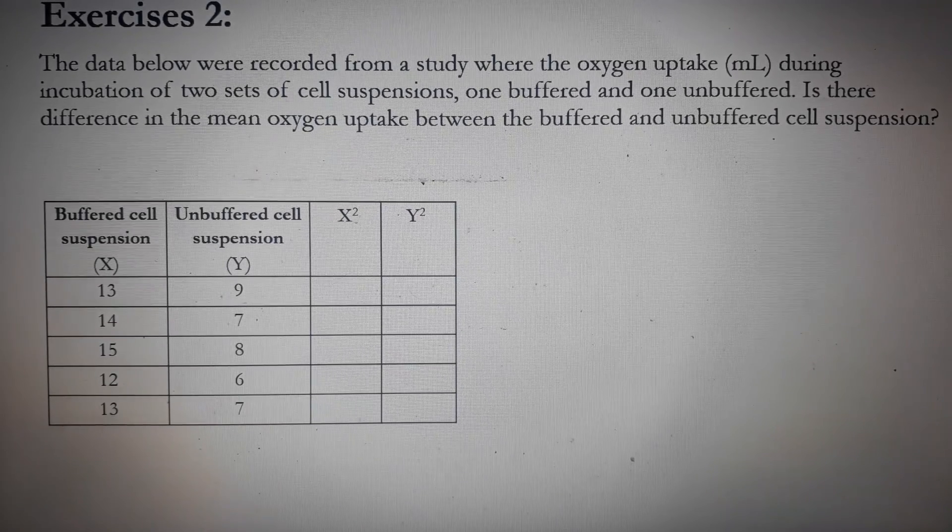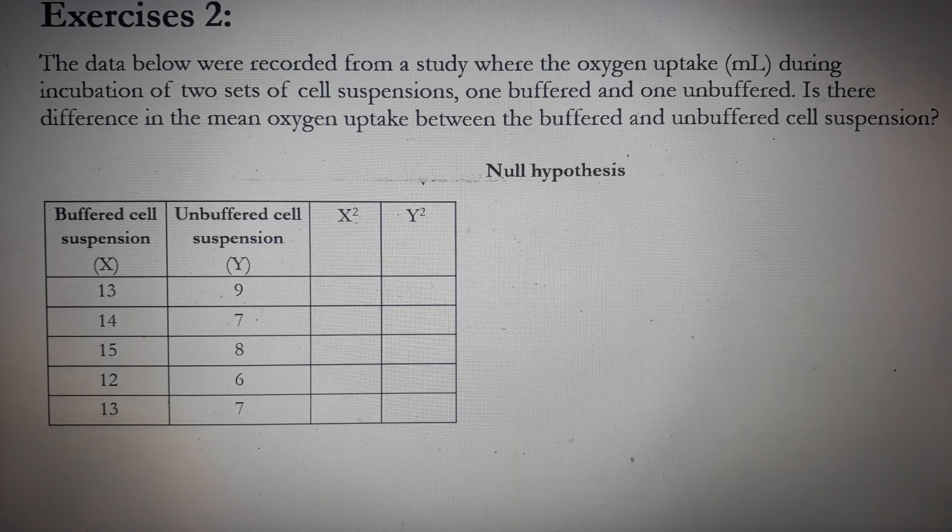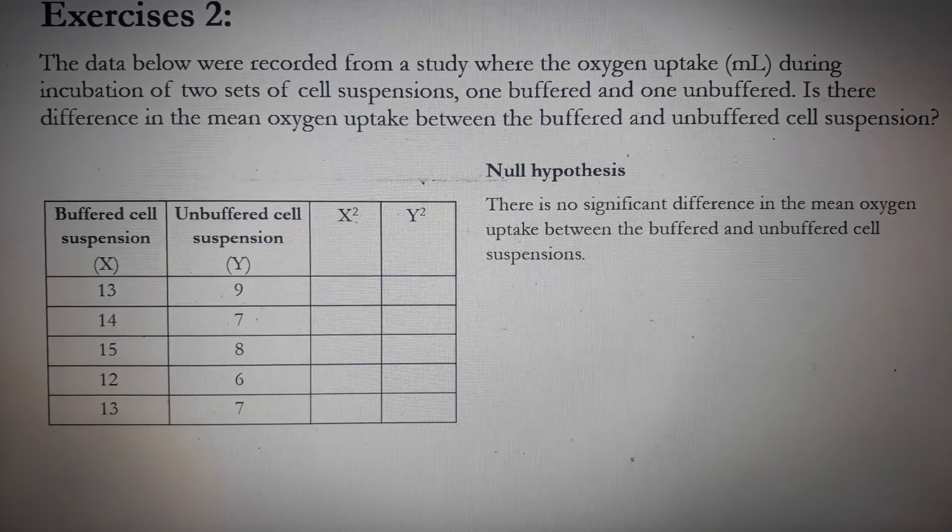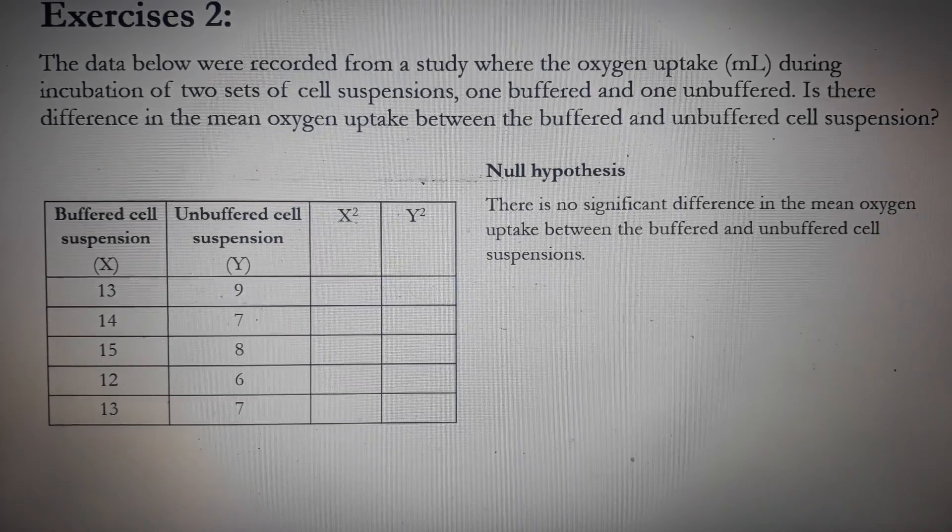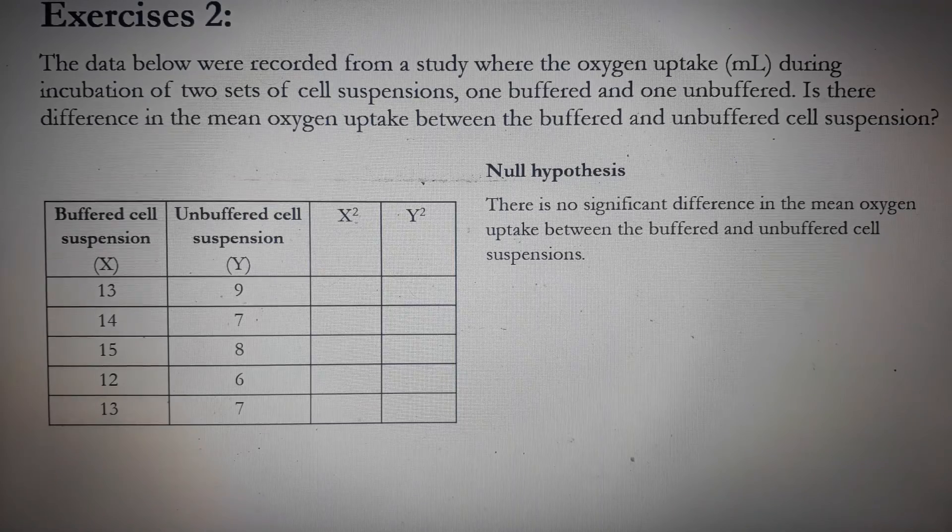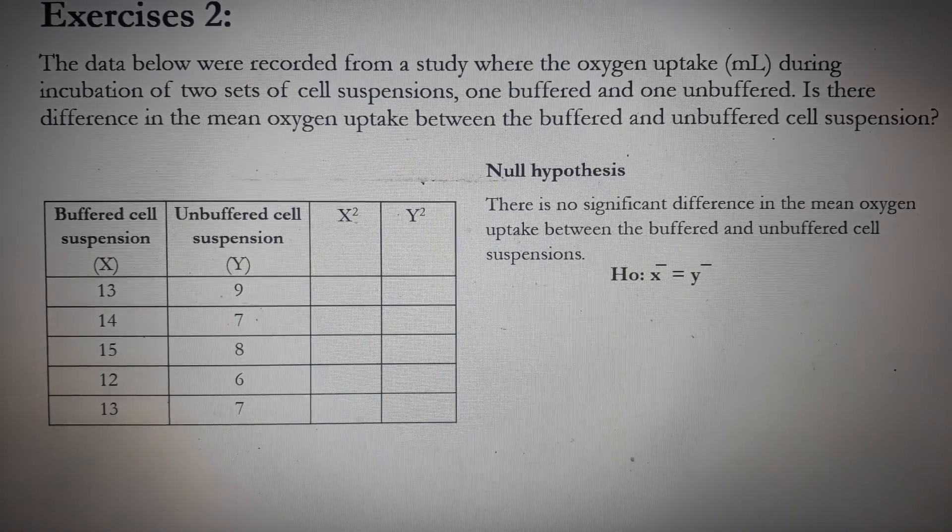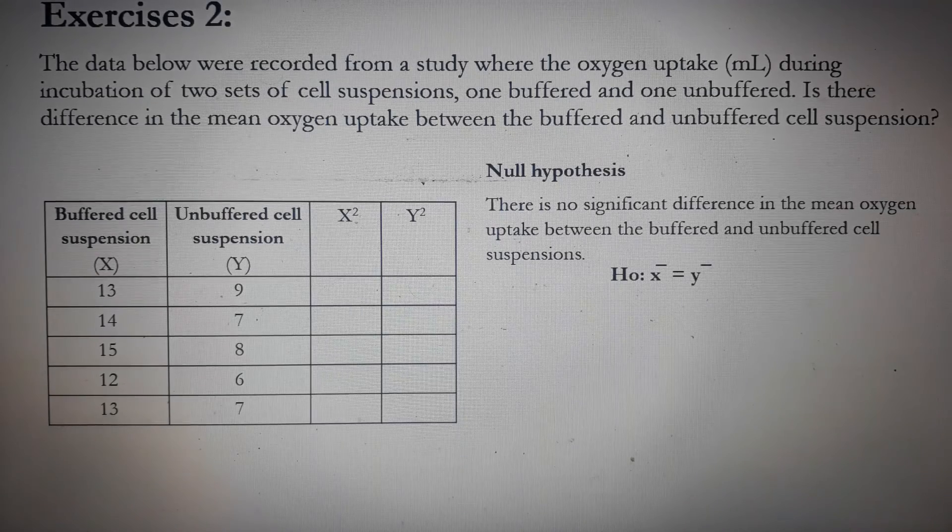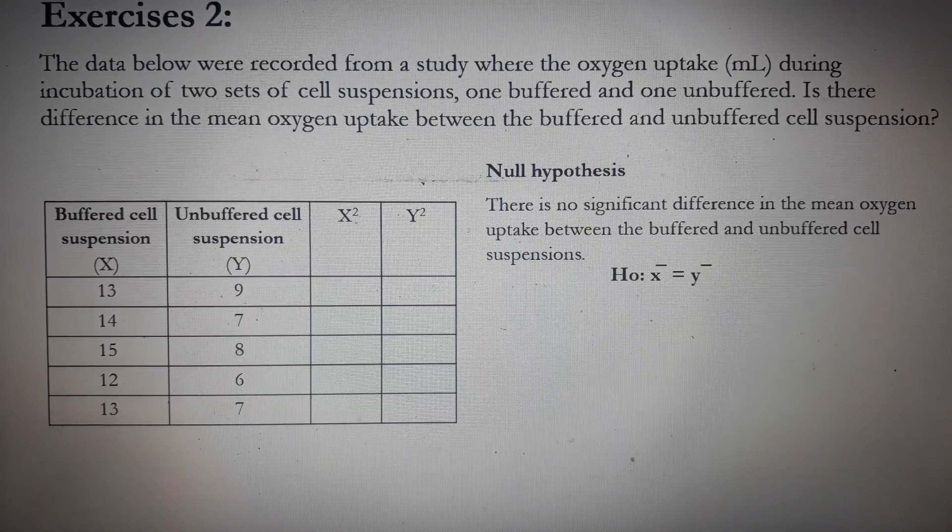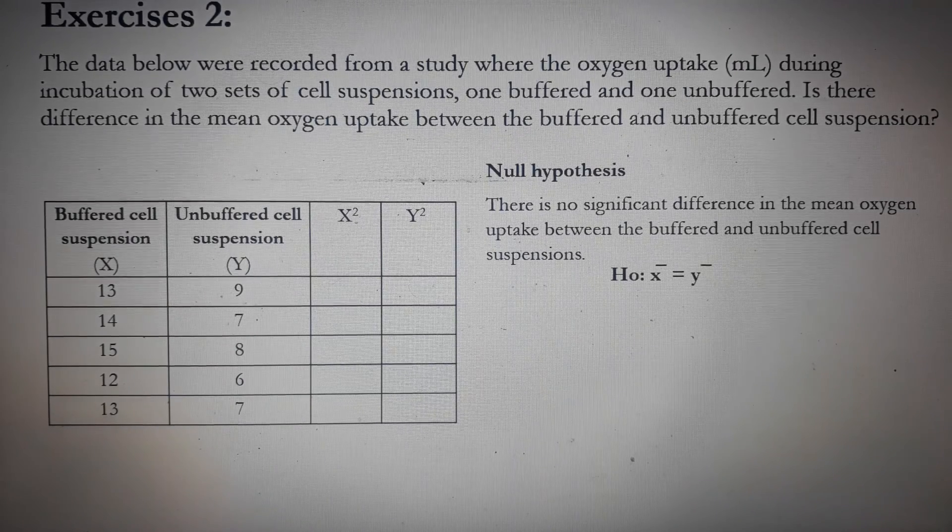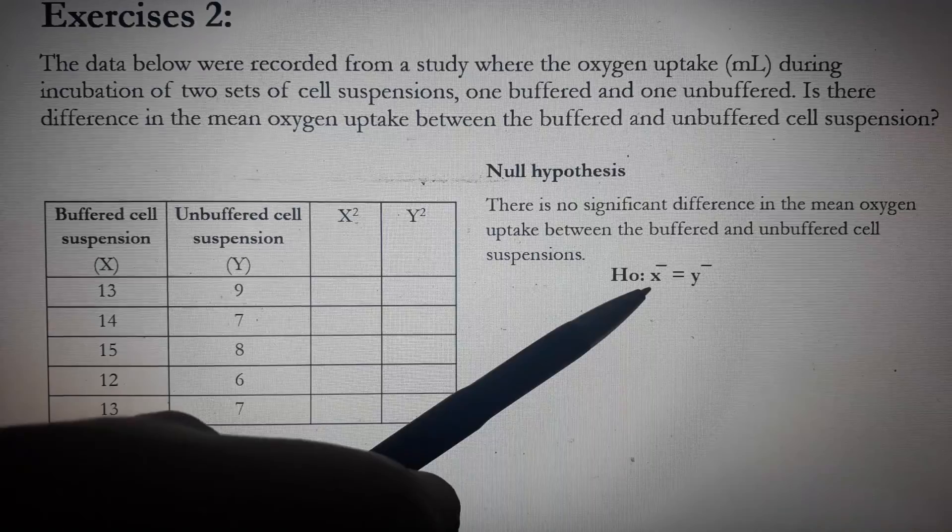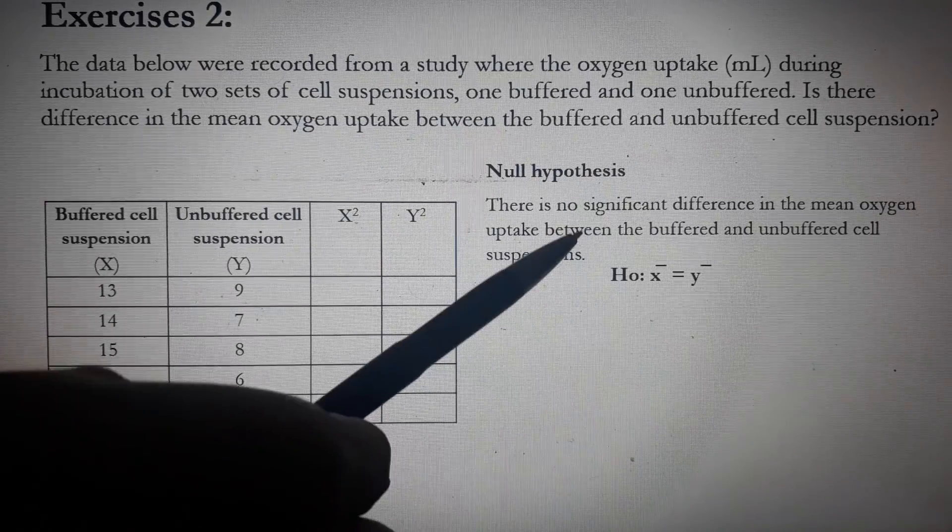Let's start with the null hypothesis. So the null hypothesis is the hypothesis of no difference. So our null hypothesis is there is no significant difference in the mean oxygen uptake between the buffered and unbuffered cell suspensions. In symbol, null hypothesis is represented by H sub 0. It can be read as H0 or H0 or even HO. So the symbol says that the mean of x is equal to the mean of y because there's no difference.